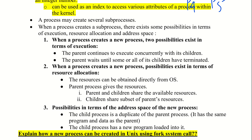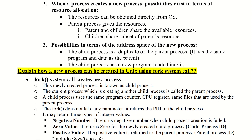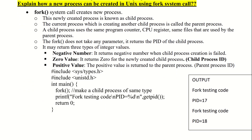To explain how a new process can be created in UNIX, we use the fork system call. The fork system call is how a new process is created in UNIX — this is a common university exam question. The fork system call creates a new process, and the newly created process is known as the child process. A process created using fork does not take any parameters and returns the PID of the child process.